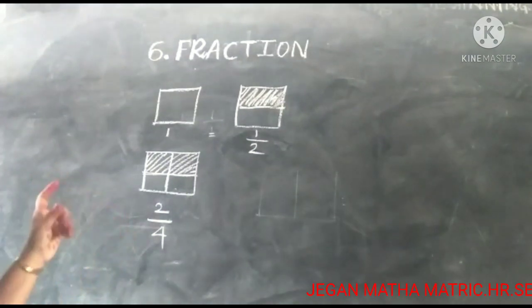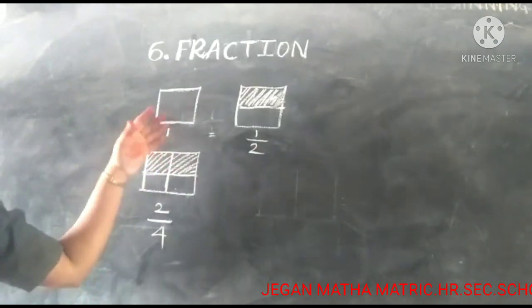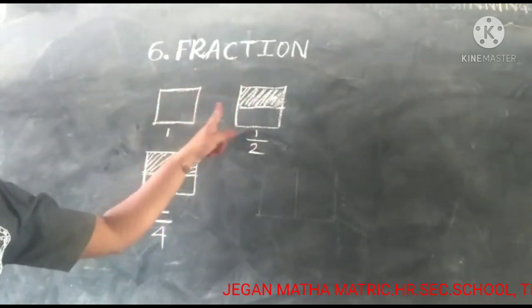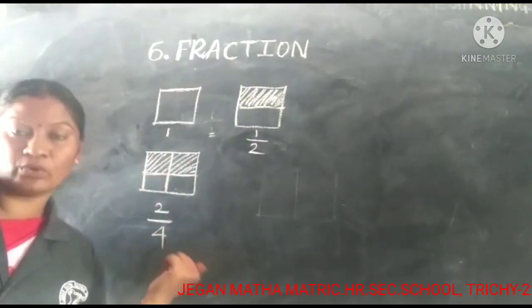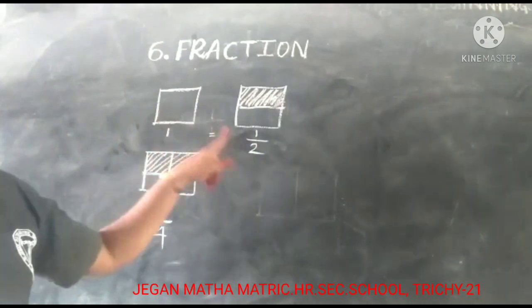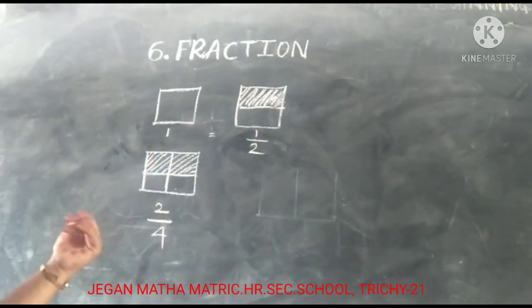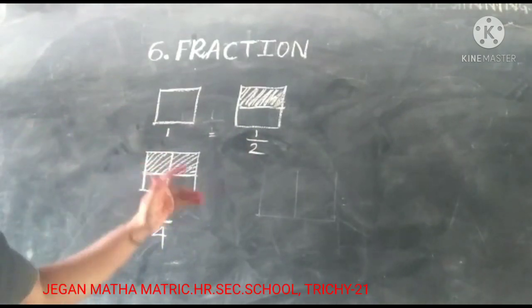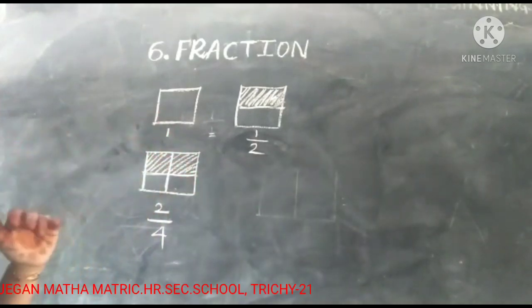Now one simple activity. First, take a square sheet of paper like this. Fold it into 2 equal parts — just fold it into 2 equal parts. Color one part of the paper. Take one sheet of paper, fold it, and color one side.